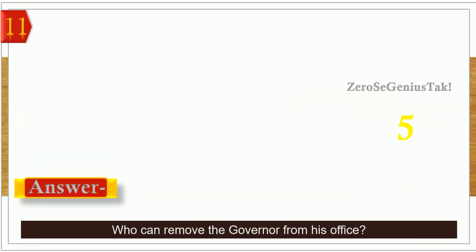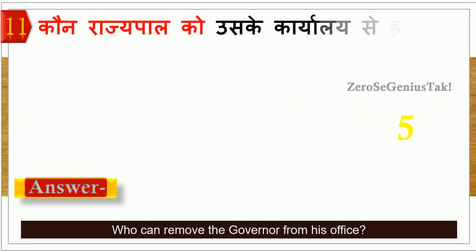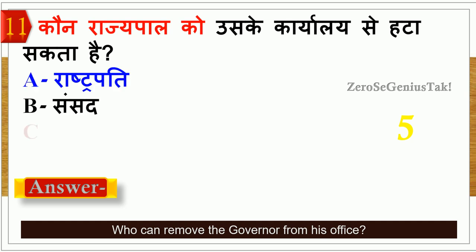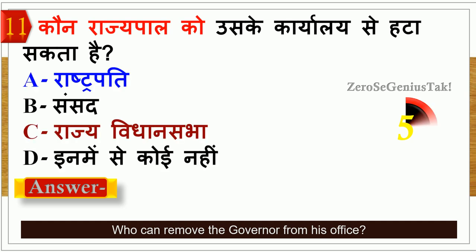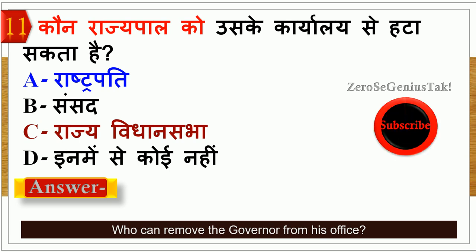We will continue with our 11th question. Who can remove the Governor from his office? The right answer is option number A — Rashtrapati (President).